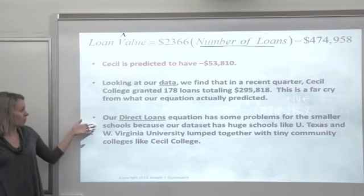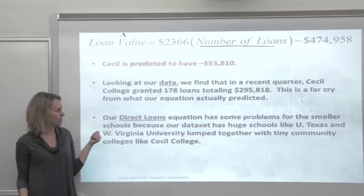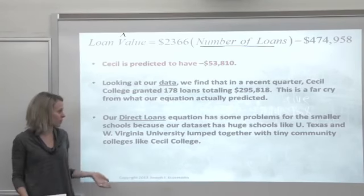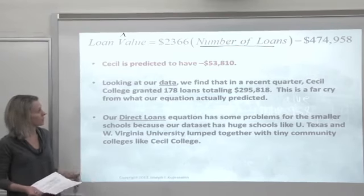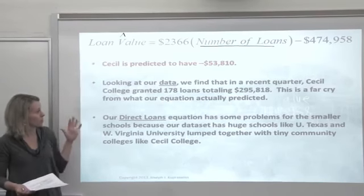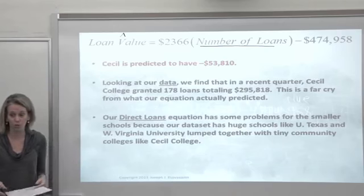Some problems with that direct loans equation is that the smaller schools got lumped in with the bigger schools. And so perhaps that makes the sort of predictive power of our equation here not so great for some of those smaller schools.